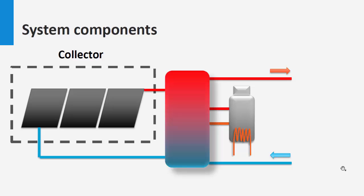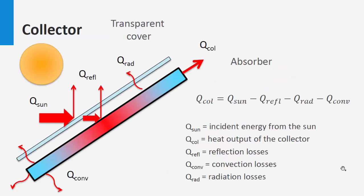It consists of a black surface called the absorber and a transparent cover. The absorber is able to absorb most of the incident energy of the sun through the transparent cover, represented by Q_sun, raising its temperature and transferring that heat to the working fluid. Thus the absorber can be cooled and the heat can be transferred elsewhere.